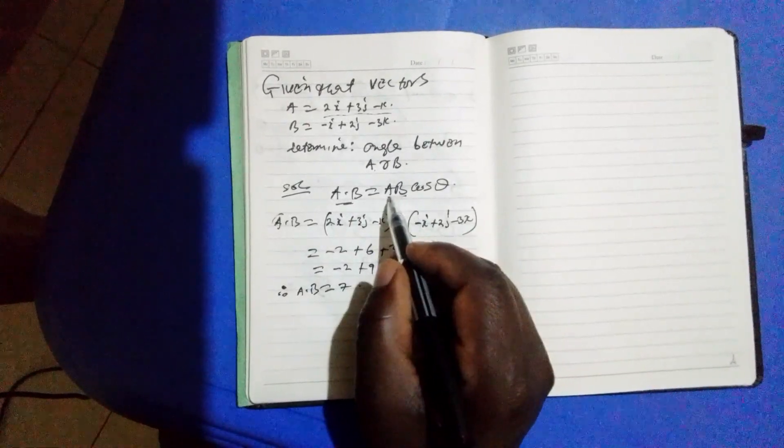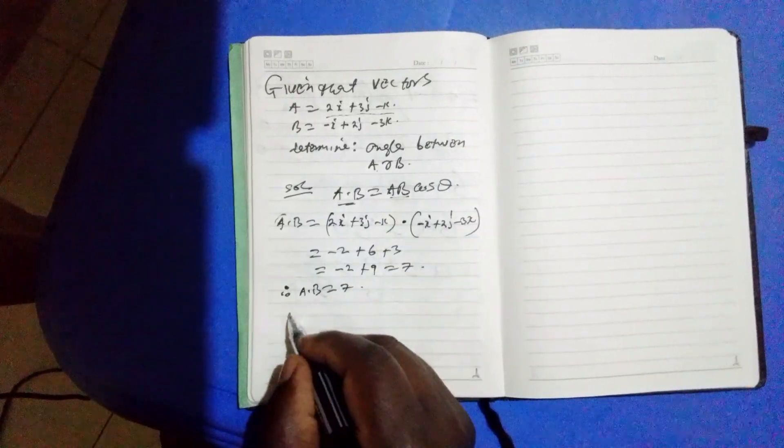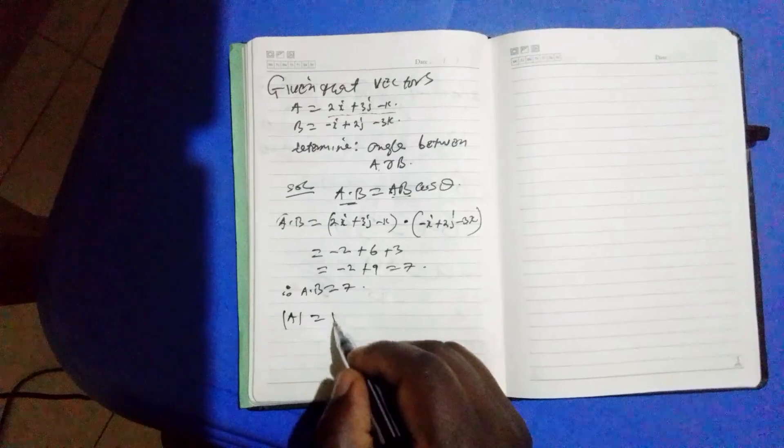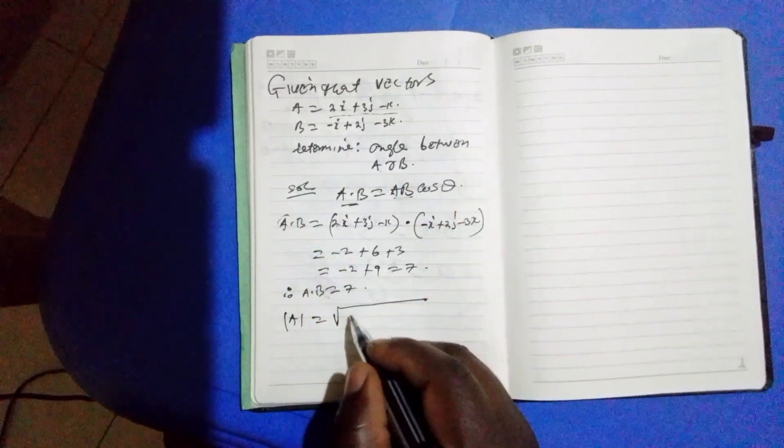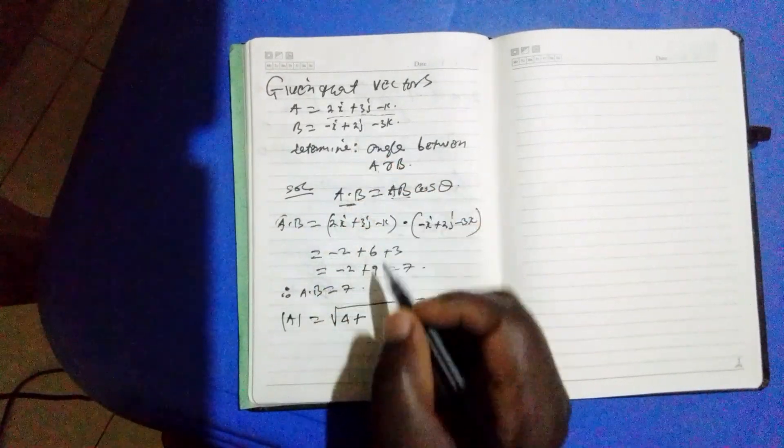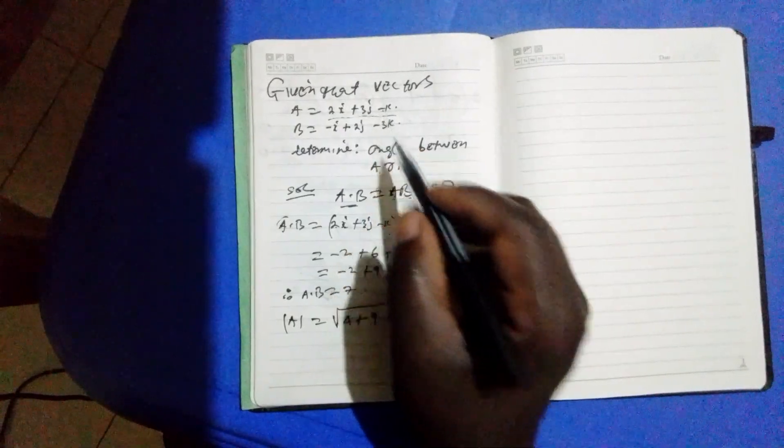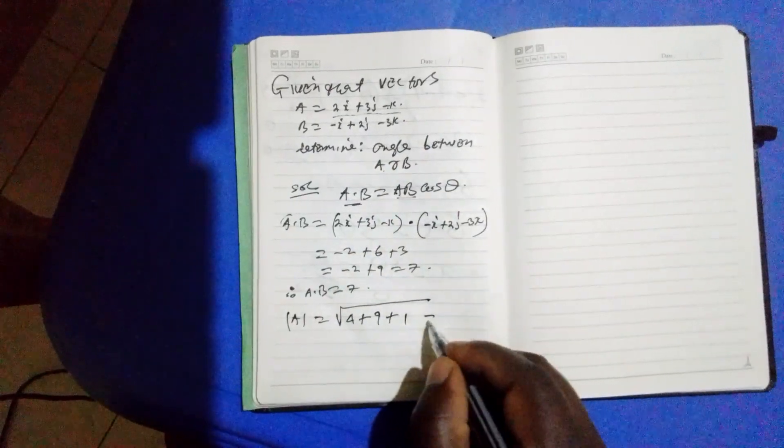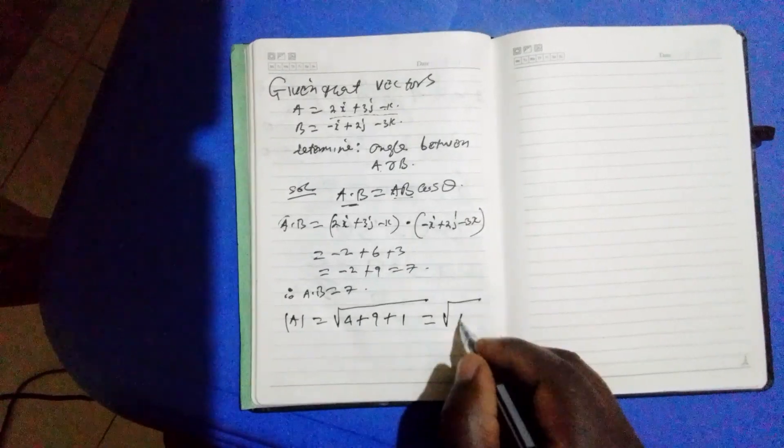Now we need to get the magnitude of a and also b. The magnitude of a equals the square root of 2 squared, which is 4, plus 3 squared, which is 9, plus negative 1 squared, which is 1. This equals to the square root of 14.